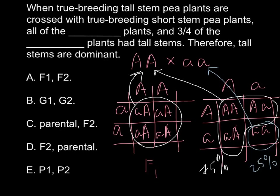Answer B: G1 and G2 stand for Gap 1 and Gap 2, which are related to meiosis — the two gaps flanking interphase — so this is not correct and we can cross it out. Answer E we can also cross out because P1 and P2 stand for Parent 1 and Parent 2. Answers C and D are also not correct, so we can cross them out.